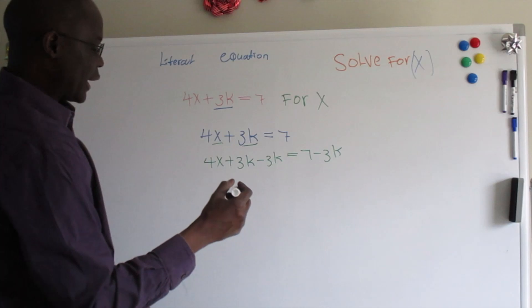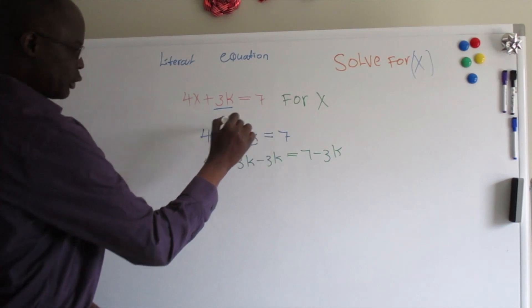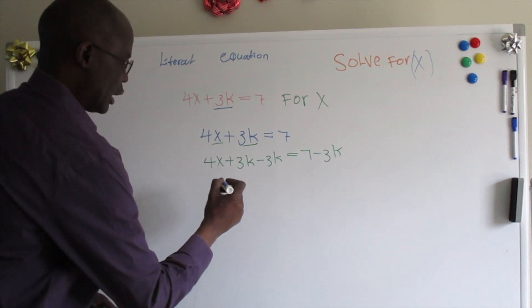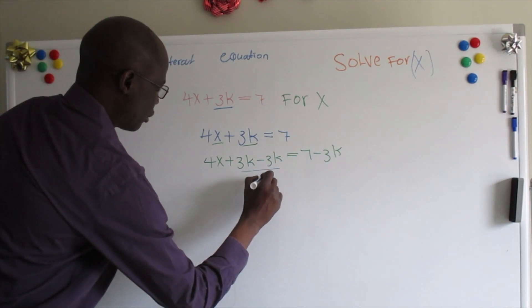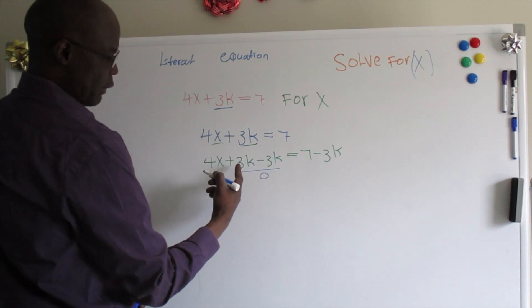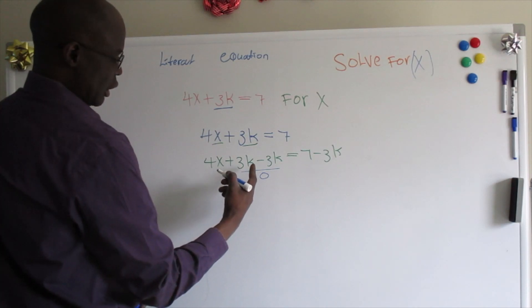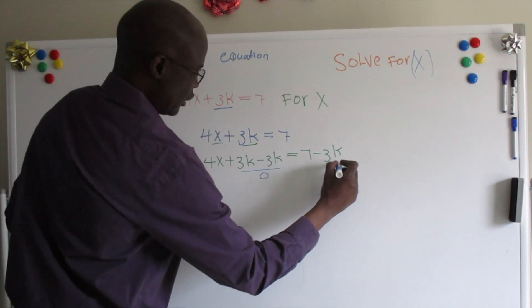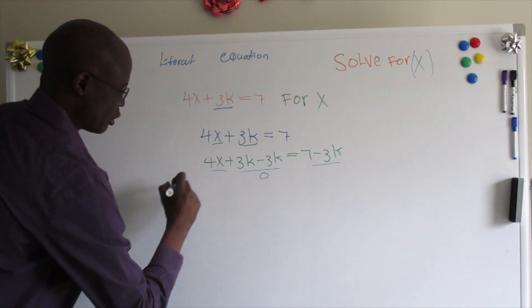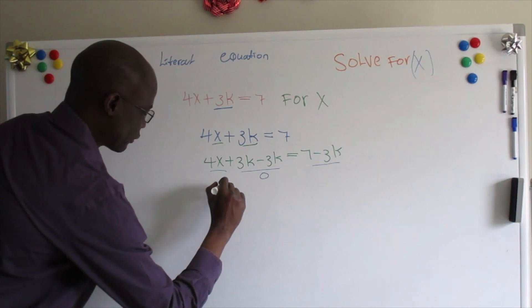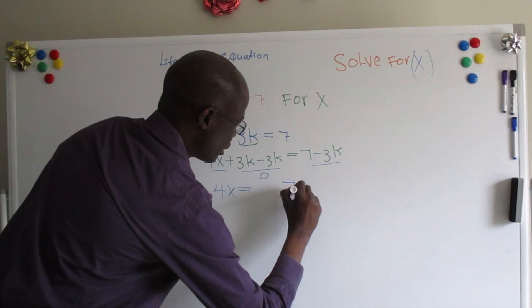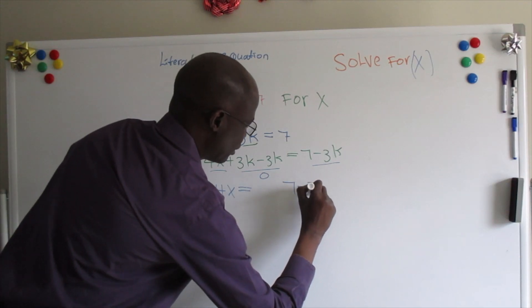What we're doing here is subtracting 3k from both sides of the equation. Because when you have a minus and a plus they cancel to zero, and you're left with 4x. So we simplify to get 4x equals 7 minus 3k.